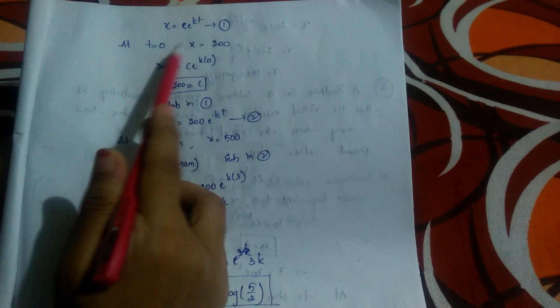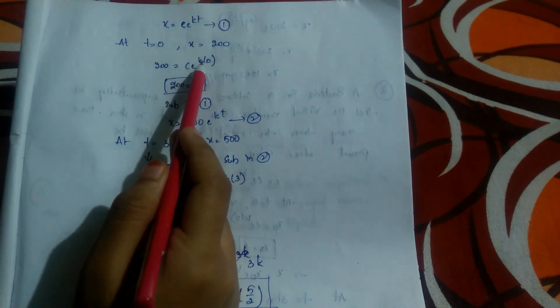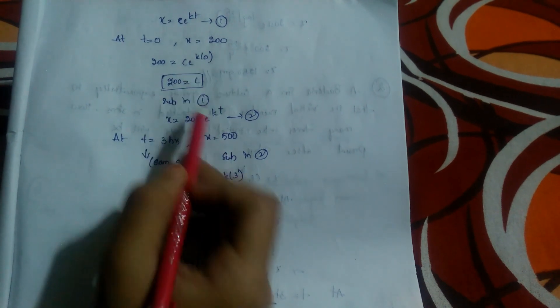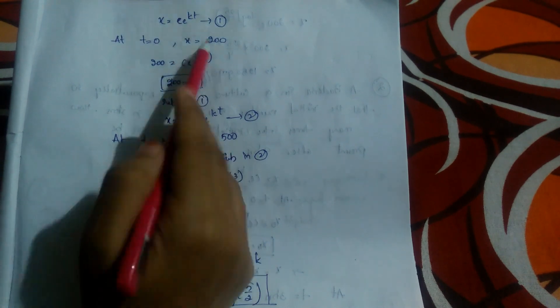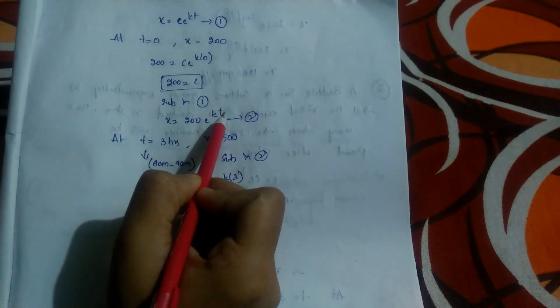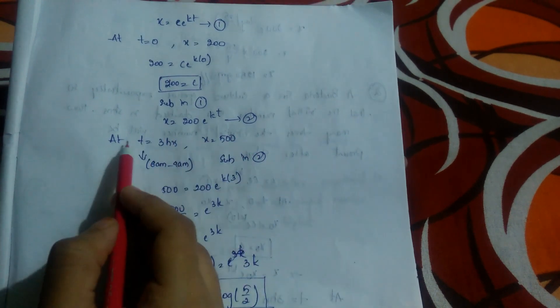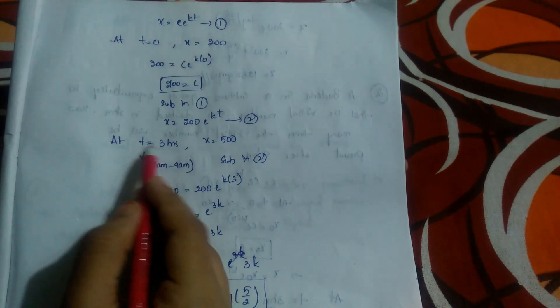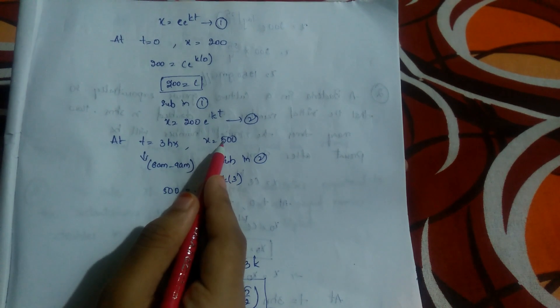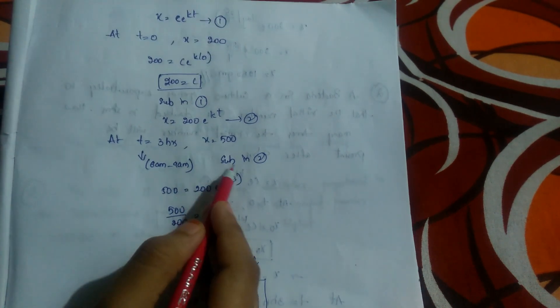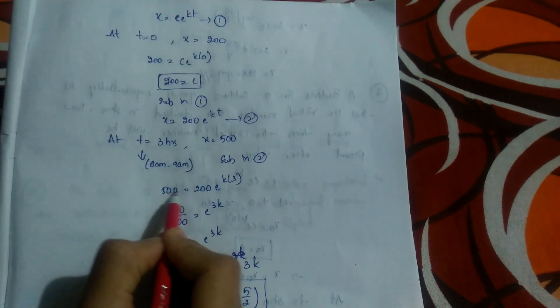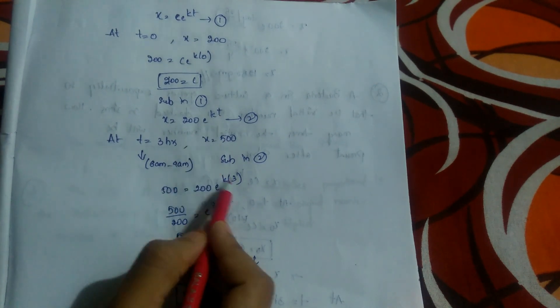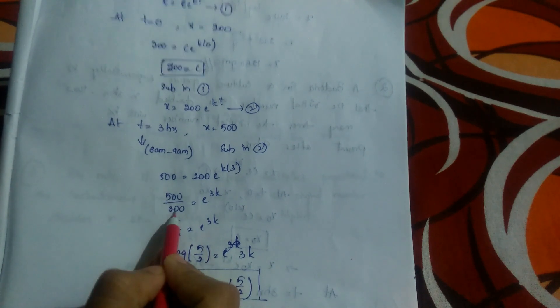Using equation 1: x = C·e^(kt). At t=0, x=200: substituting gives 200 = C·e^0 = C·1, so C=200. Substituting C back, we get equation 2: x = 200·e^(kt). At t=3 hours, x=500: substituting gives 500 = 200·e^(3k), so 500/200 = e^(3k), which simplifies to 5/2 = e^(3k).